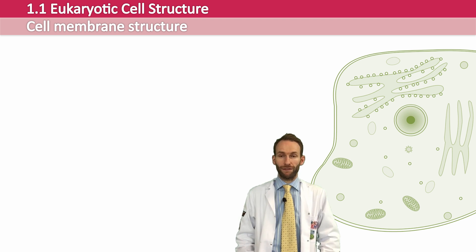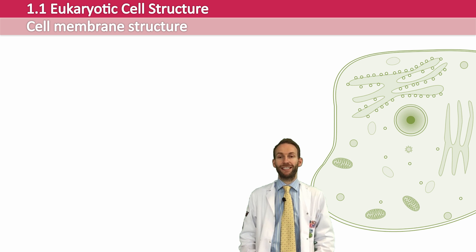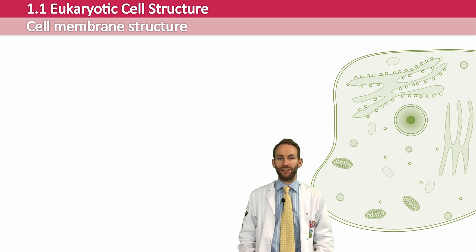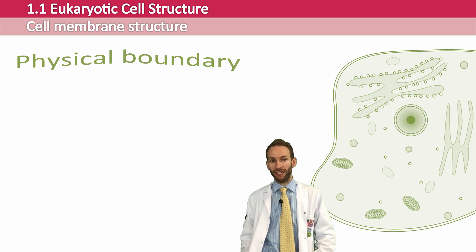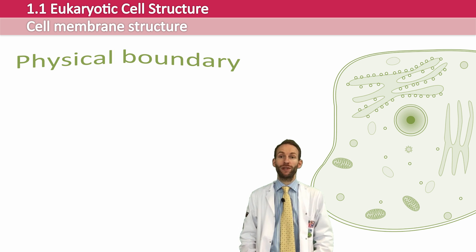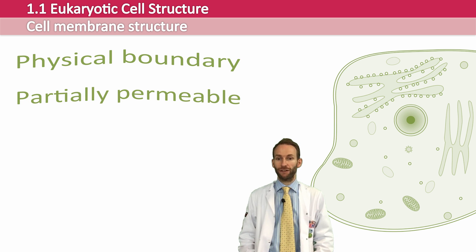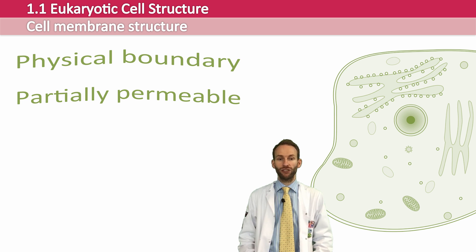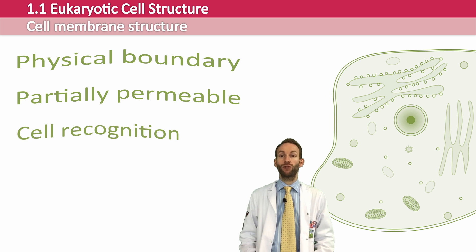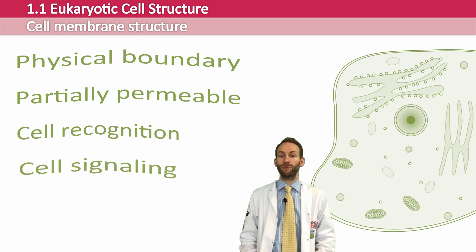The most obvious function is that the cell membrane is a physical boundary between the outside and inside of a cell, and it can control what substances pass in and what substances pass out — we call this partially permeable. It also has various other functions which allow the cell to interact with its surrounding environment, including cell recognition and cell signalling. It is also the base attachment for the cytoskeleton, which gives the cell its shape.